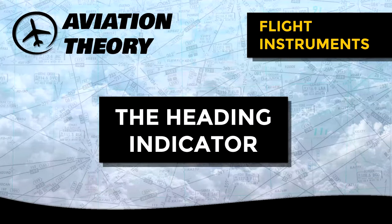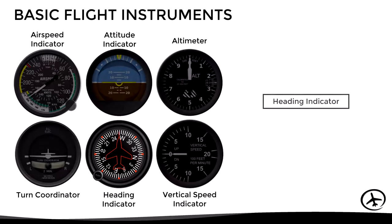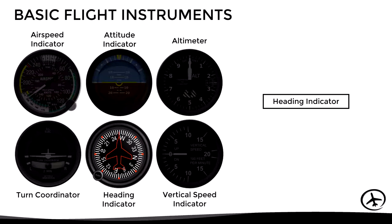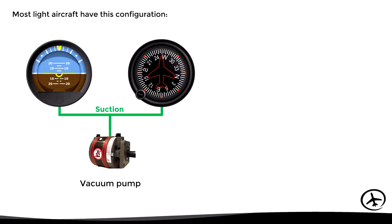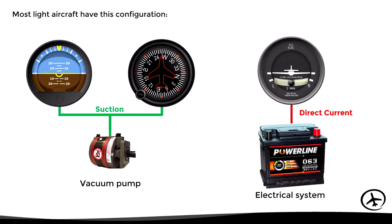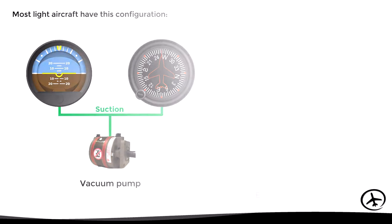Today we will talk about the heading indicator, also known as the directional gyro. This is one of the basic flight instruments found in any aircraft, and its operation is based on gyroscopic principles. Most light aircraft have the following configuration: the vacuum pump provides suction to drive the gyros of the attitude indicator and the heading indicator, while the gyro of the turn coordinator is driven by direct current from the aircraft electrical system.